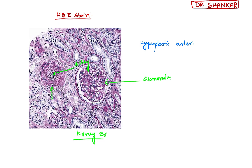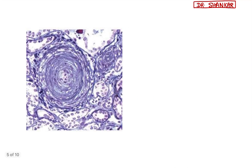This is hyperplastic arteriosclerosis. In case of hyaline arteriosclerosis, you will find hyaline-like material around the artery, but in case of hyperplastic arteriosclerosis you will find this type of onion skin peel appearance. This is suggestive of malignant hypertension. In malignant hypertension there is hyperplastic arteriosclerosis, so this kidney biopsy is suggestive of malignant hypertension resulting in malignant nephrosclerosis.